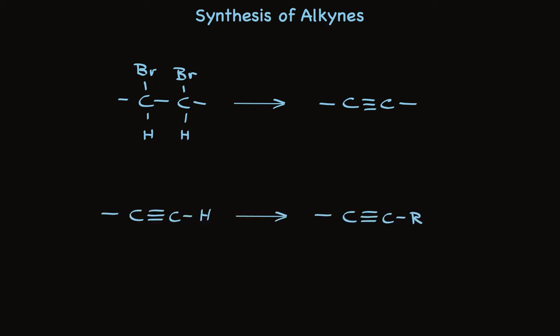The second one is different. It takes advantage of the fact that you can remove an acetylene hydrogen from a terminal alkyne. And when you do that, it makes a nucleophile. That nucleophile can react with alkyl halides, so in a two-step process, you replace hydrogen with an alkyl group.